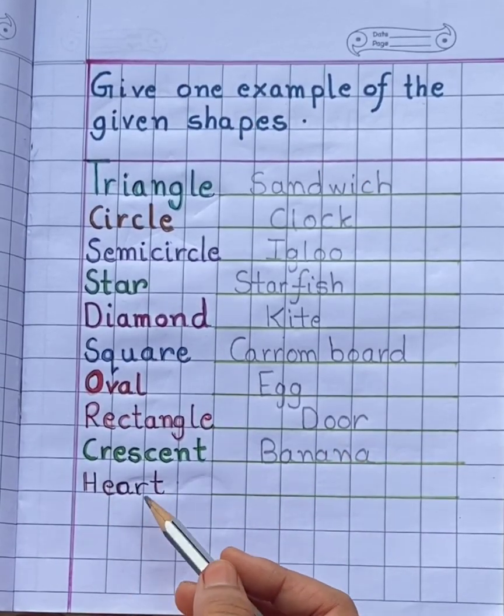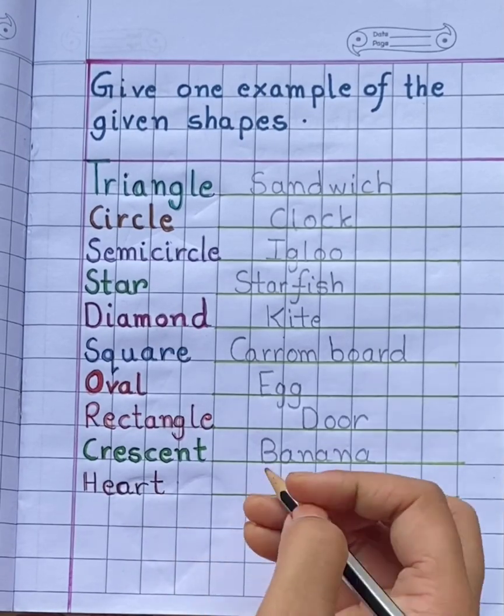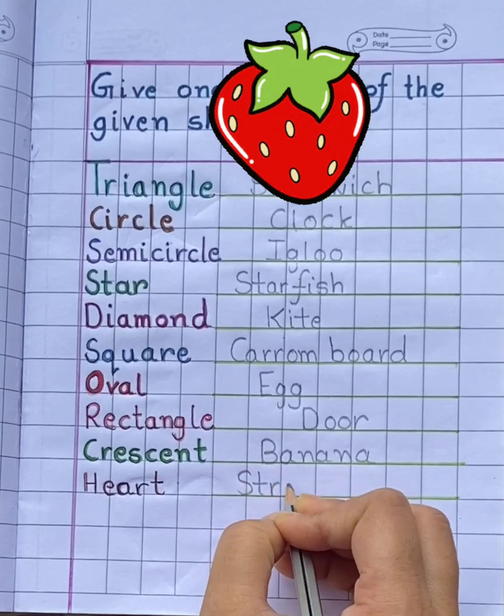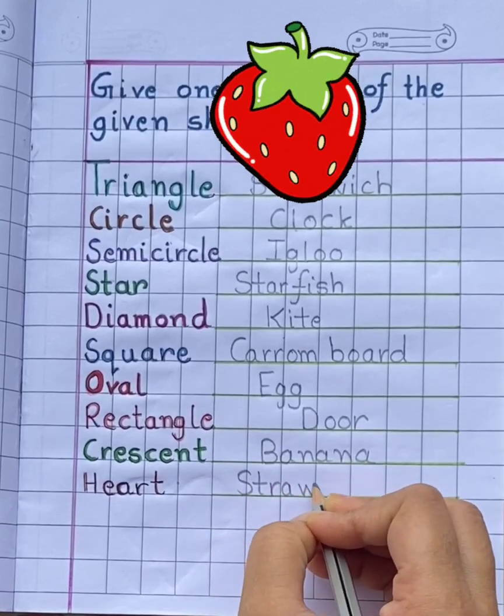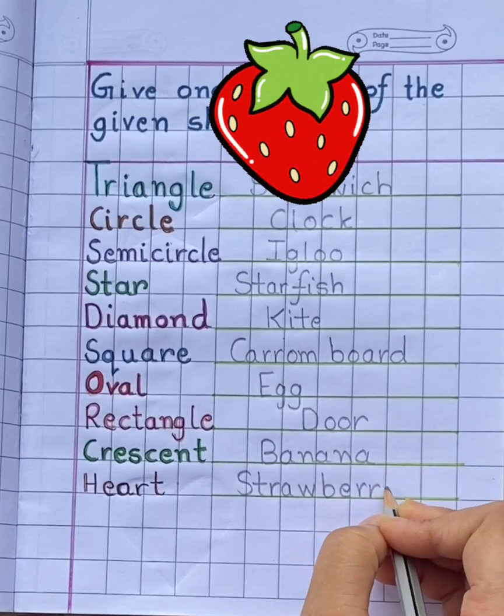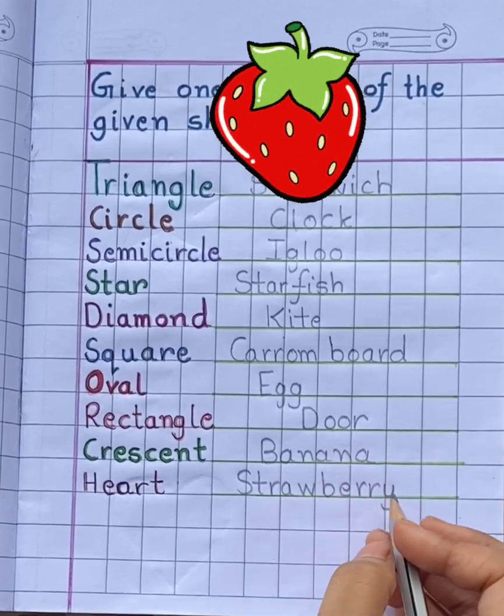And the last shape is heart. Example of heart is strawberry. S-T-R-A-W-B-E-R-R-Y.